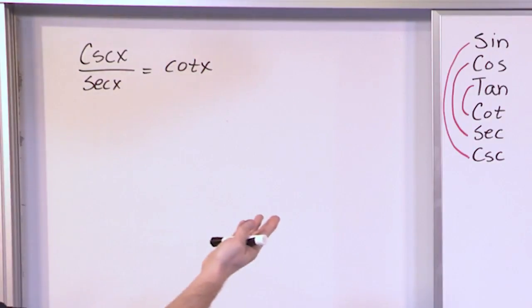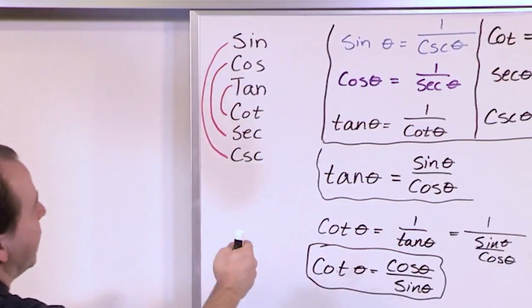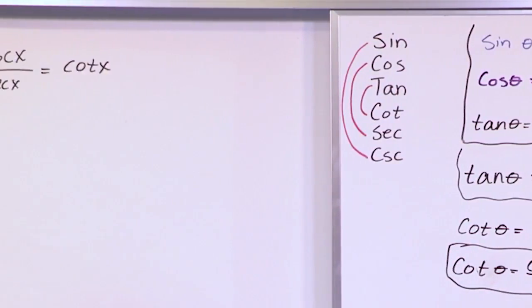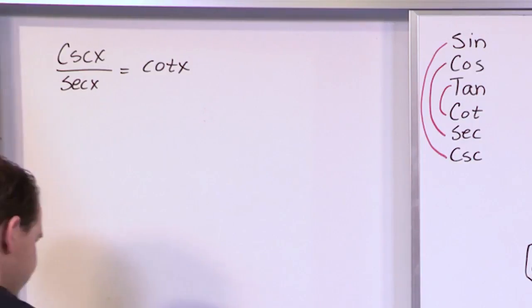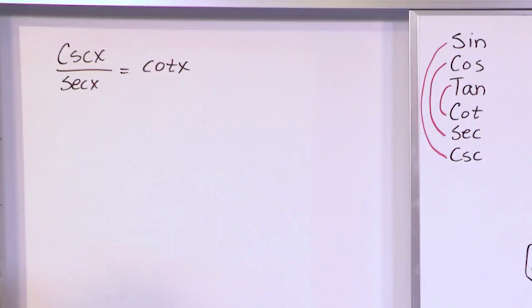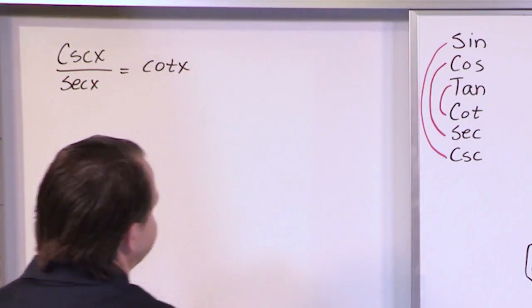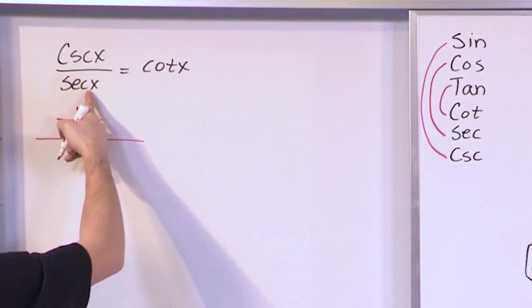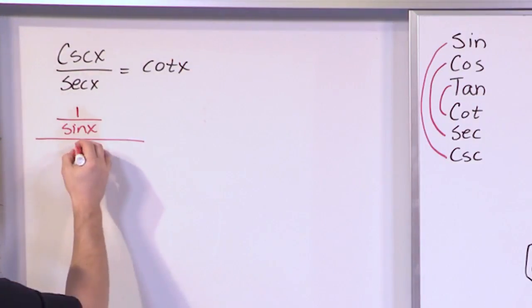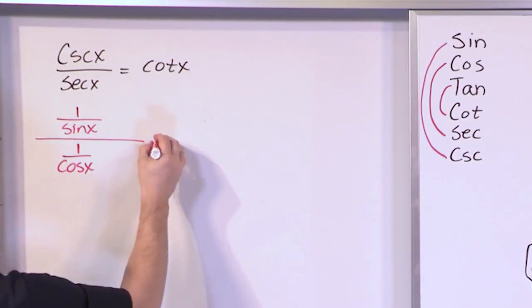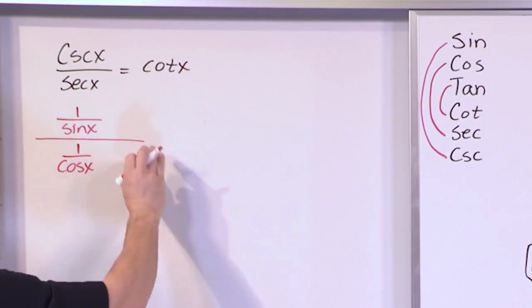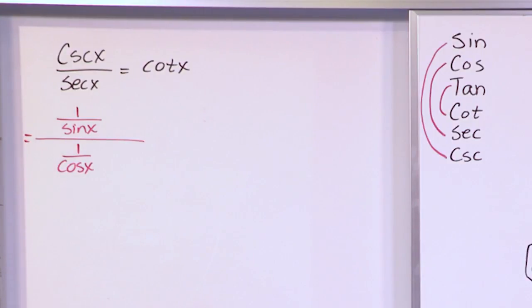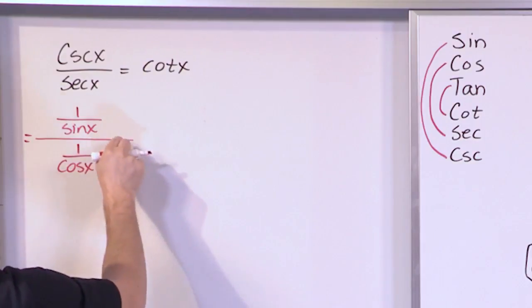When you look at this, you may not know how to start. You see cosecant and say, well, cosecant is one over sine, and secant involves cosine — how does that equal cotangent? You may not see how it works out. So you just do what you know is true. Cosecant, from the trig rainbow, is one over sine. So on the top of the big fraction I'll write one over sine of x. For the denominator, secant is one over cosine, so I write one over cosine of x there.